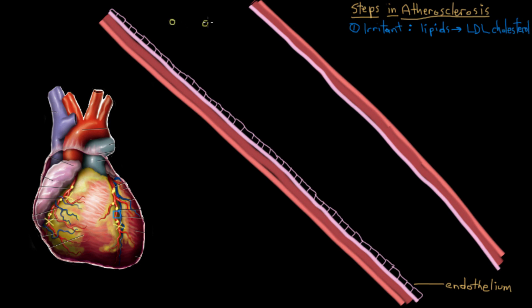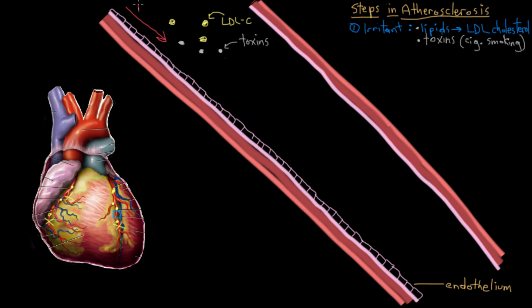Another irritant, probably the worst one, is toxins from cigarette smoking. We'll put some toxins from cigarette smoking in the blood. And another major one is hypertension — high blood pressure. I'll show that pathologically high blood pressure here with these arrows. It's the chronic exposure to high blood pressure that matters — not just high blood pressure every once in a while. So that's our first step: having an irritant present.